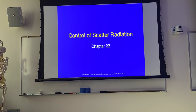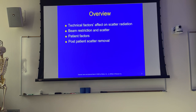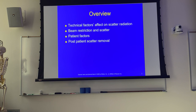We'll start with production of scatter radiation and how we control scatter radiation. We're going to talk about technical factors and their effect on scatter radiation, beam restriction and scatter, patient factors, and then post-patient scatter removal and our options for removing scatter radiation. Really, scatter and its effect on the image is what we're going to talk about, but we're also going to talk about how to prevent or control scatter. There are essentially two different ways to do that.